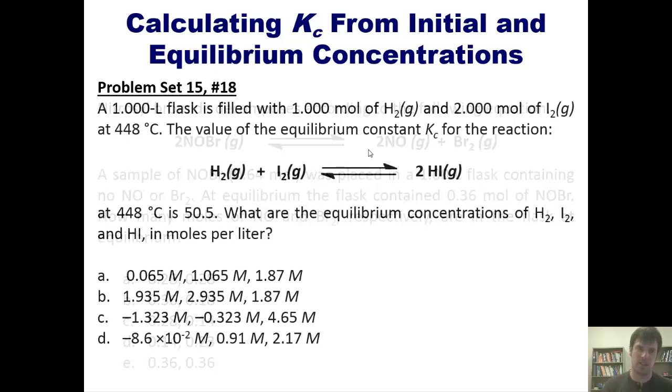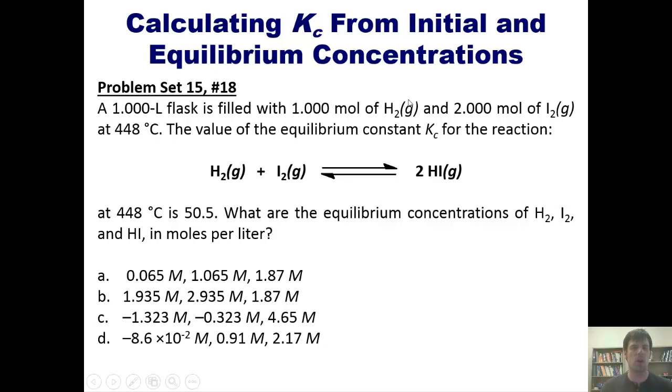And now I'll conclude with this example. A 1 liter flask is filled with 1 mole of H2 and 2 moles of I2 at 448°C. The value of the equilibrium constant expression Kc for this reaction is that number. What are the equilibrium concentrations of H2, I2, and HI in moles per liter? Now this is an interesting one because in this problem, we actually have the value of Kc. We also have the initial concentrations of H2 and I2. What we lack are the equilibrium concentrations of H2, I2, and HI, and that is what we're asked to do. Now I'm not going to solve this problem for you at all, even on the board. I will make you do it on your own. However, I will give you the hint that you have to use an ice table to do it.